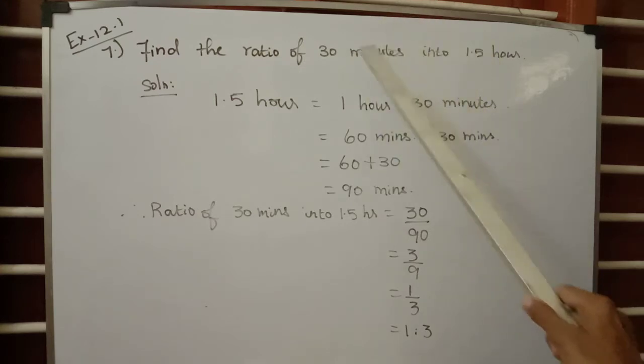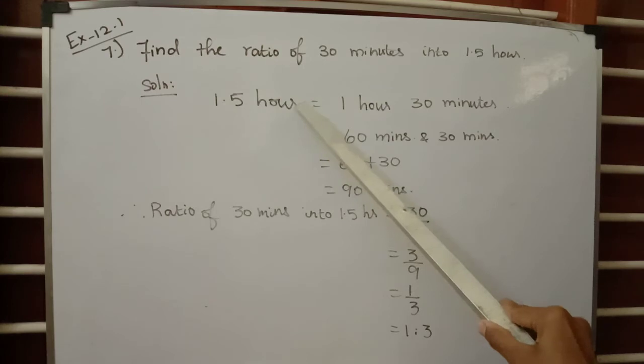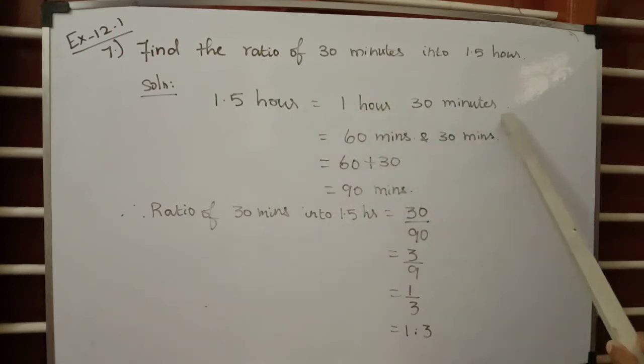We are going to compare 30 minutes to 1.5 hours. First of all, convert the hours into minutes. 1.5 hours equals 1 hour and 30 minutes, that is one and a half hours. 1 hour can be converted into minutes - 1 hour equals 60 minutes.